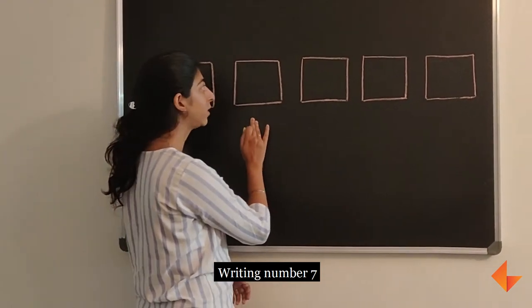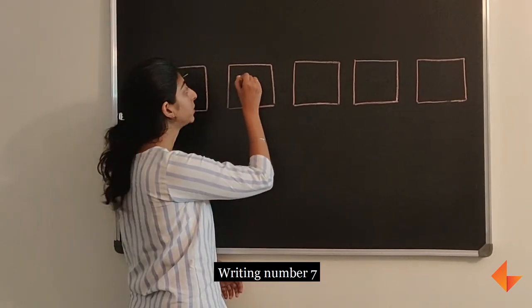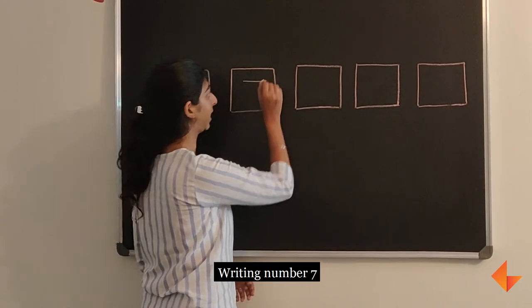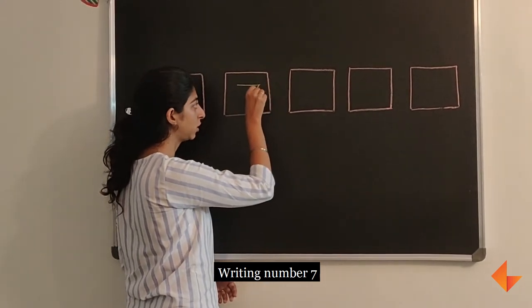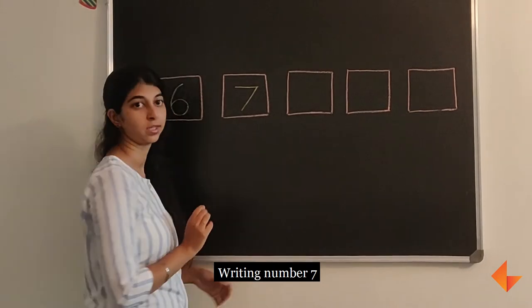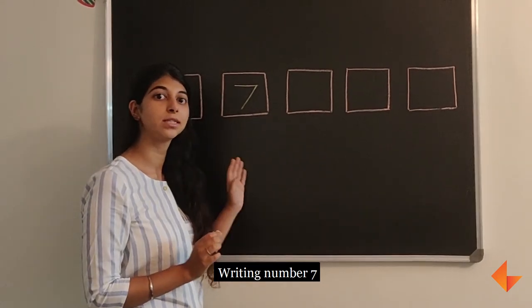To write number 7, start at the top and draw a sleeping line. From here draw a slanting line. This is how you write number 7.